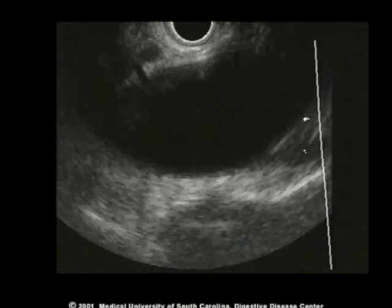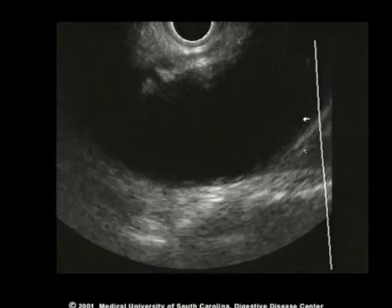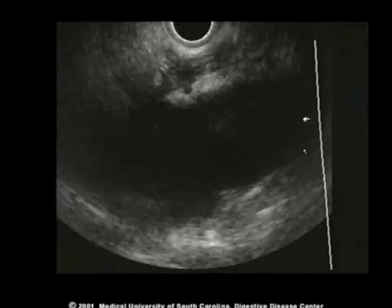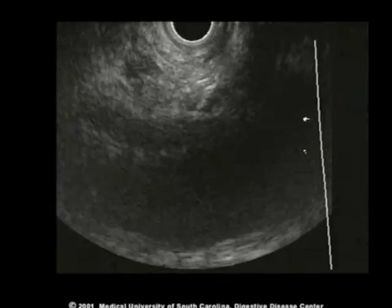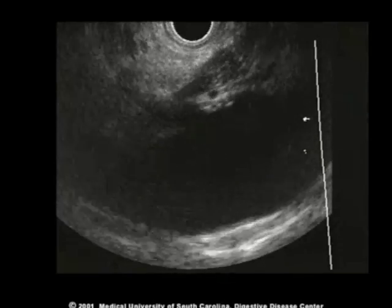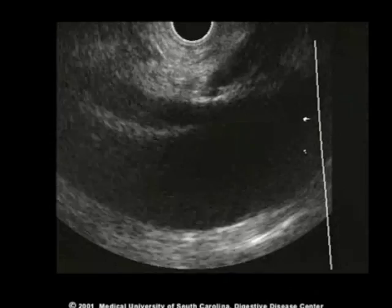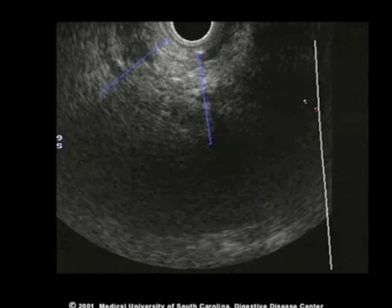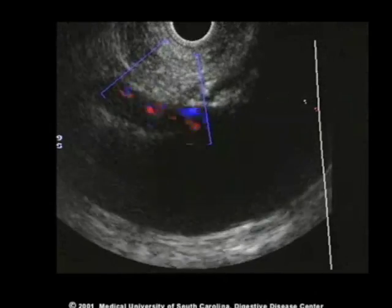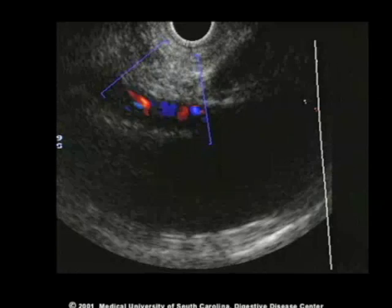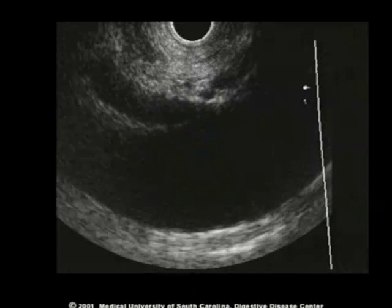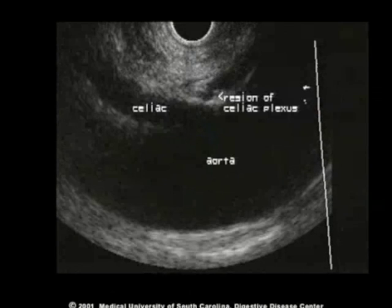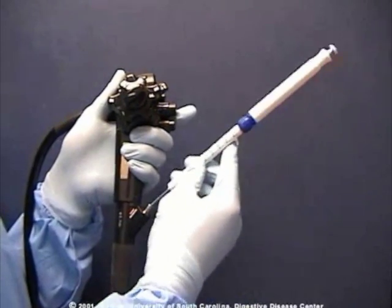Once the aorta is identified, the echo endoscope is advanced forward through the GE junction. The first major artery to come off anterior to the aorta is the celiac artery. The space immediately superior and cephalad of the celiac artery is the region of the celiac plexus.